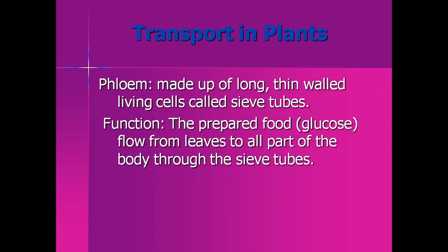Another kind of tissue used for transportation is phloem. Phloem is made of long thin-walled living cells which are called sieve tubes. The function of these sieve tubes is to transport the prepared food — that is glucose — from the leaves to all parts of the body like root, stem, leaves, and flowers.